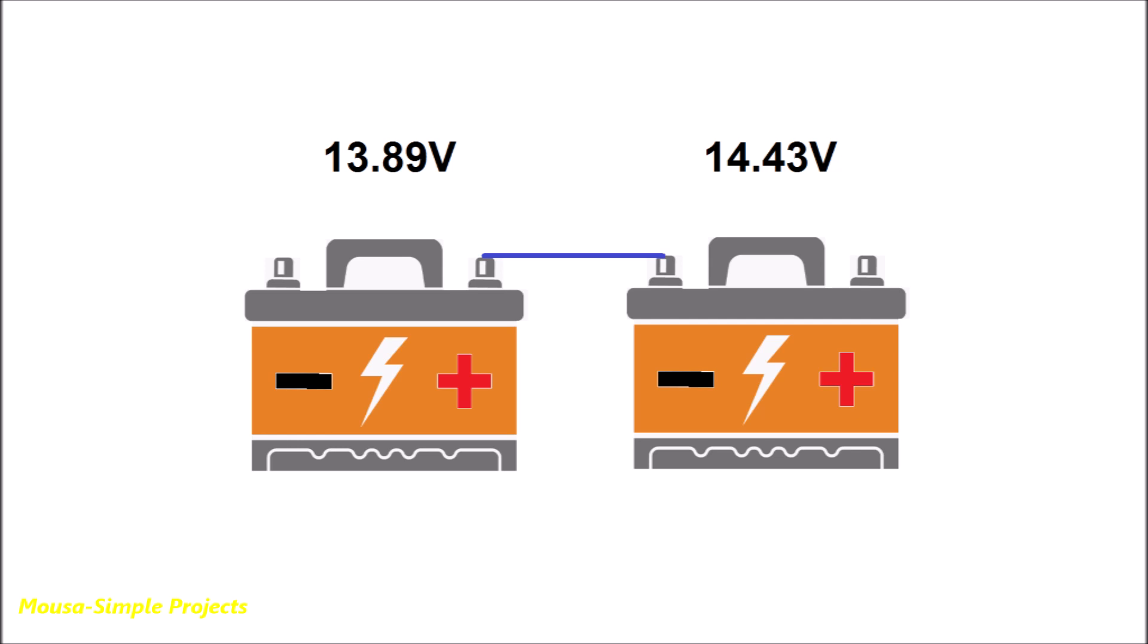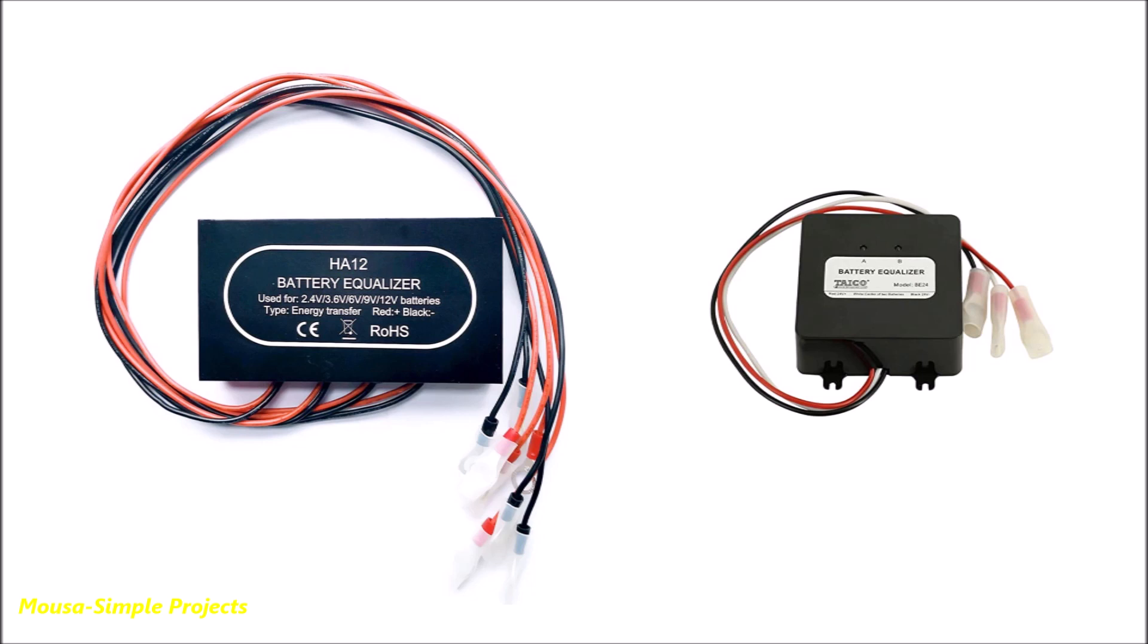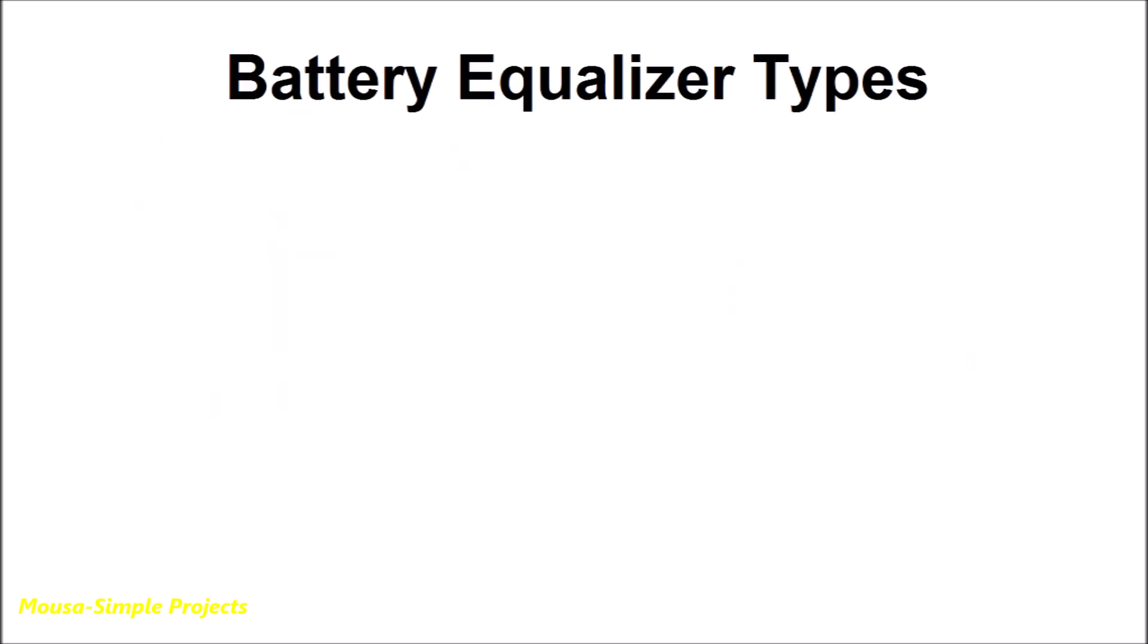Because one of them can get fully charged while the other stays not charged. To solve this problem we have to use a battery equalizer or battery balancer. There are two different types of battery equalizer: passive and active.